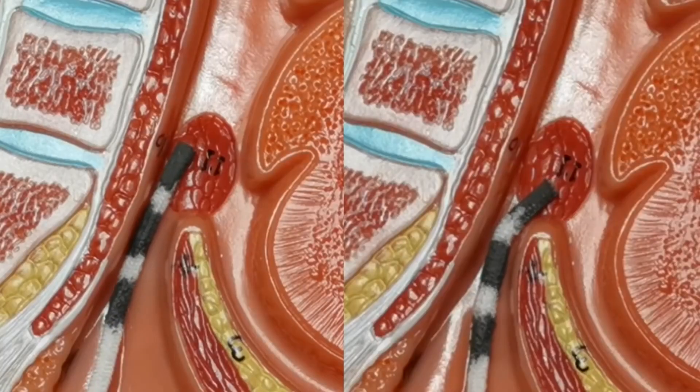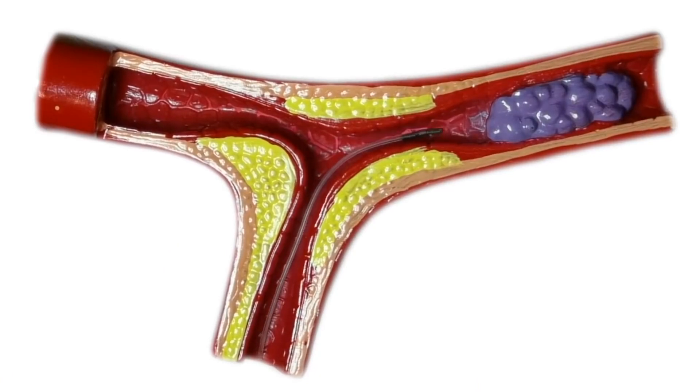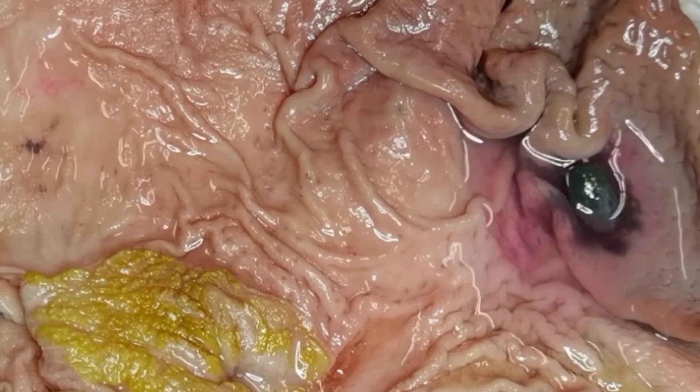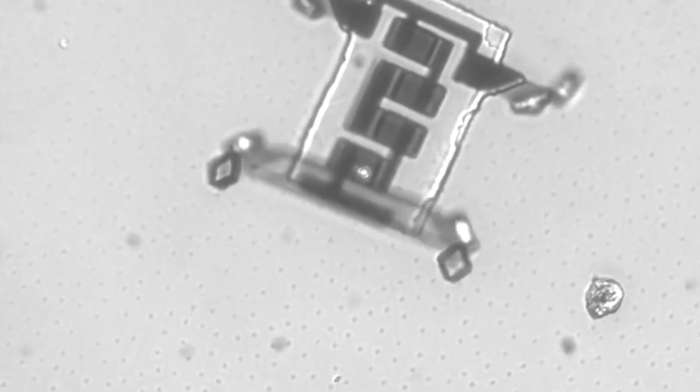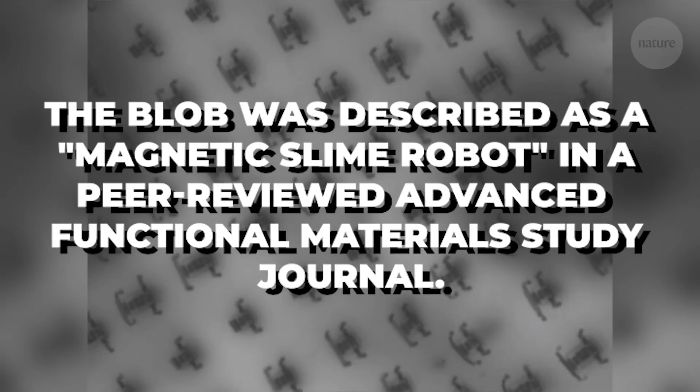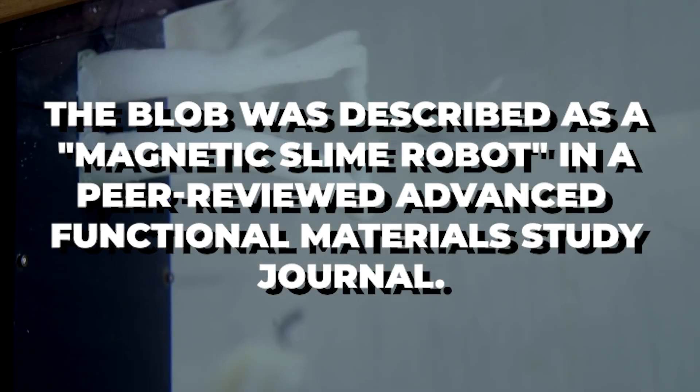When external magnets are introduced to the slime, they can manage to travel, rotate, or form O and C shapes because it includes magnetic particles. The blob was described as a magnetic slime robot in a peer-reviewed Advanced Functional Materials Study Journal.